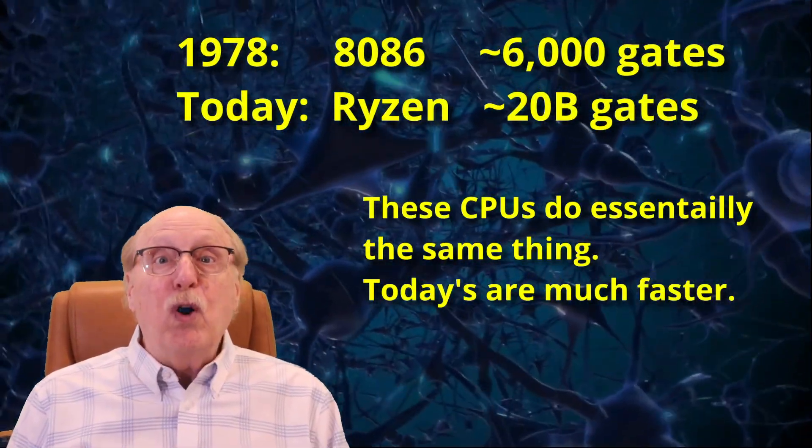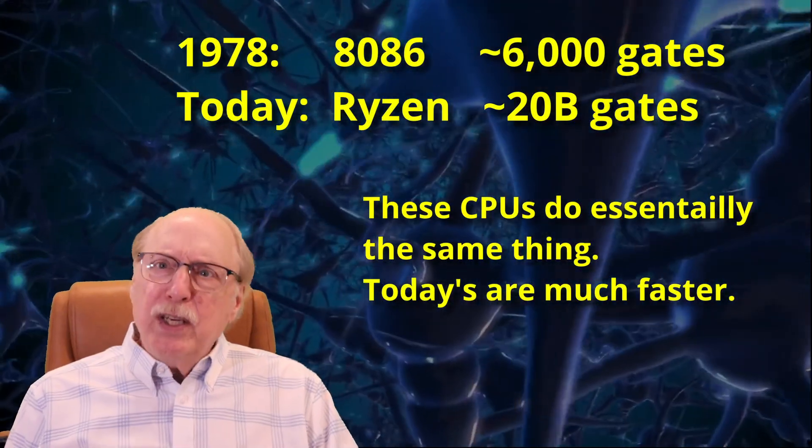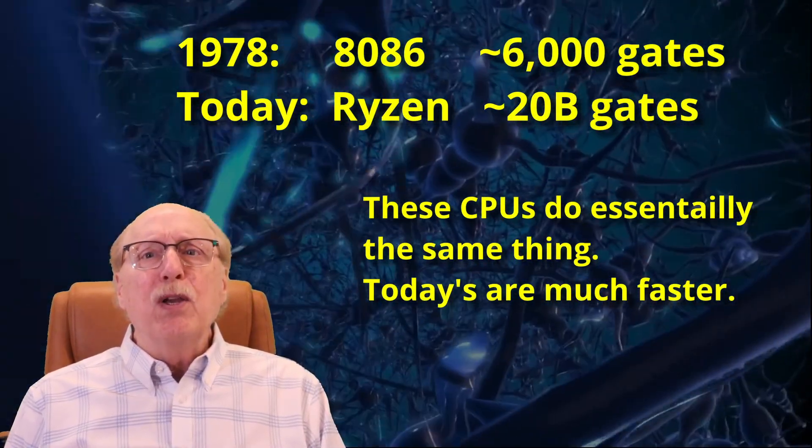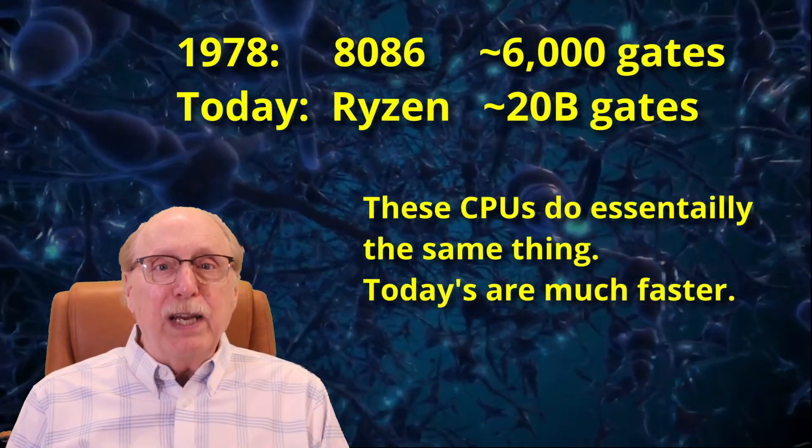Early CPUs used only a few thousand logic gates. Today's CPUs use billions, primarily so that CPUs can run much faster.